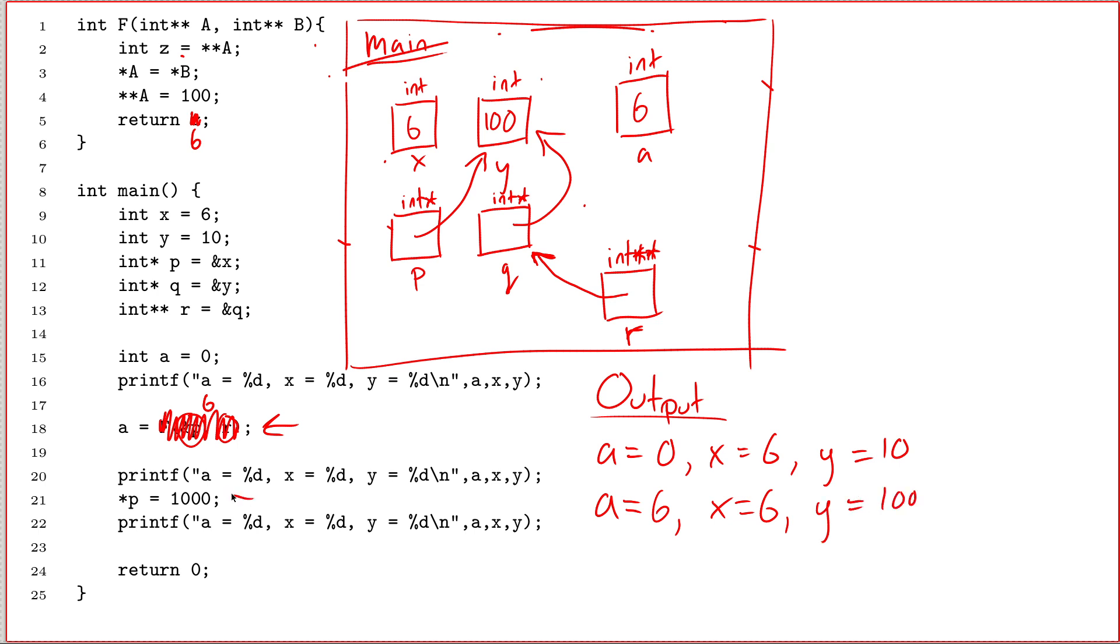Line 21. Star p equals 1000. So I take the value 1000 and I assign it to wherever I end up if I start at p and follow one arrow. So I start at p, I follow an arrow, and now I set this to have the value 1000.